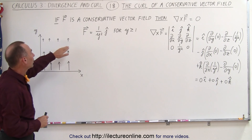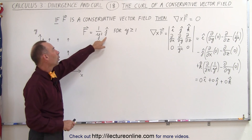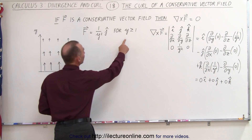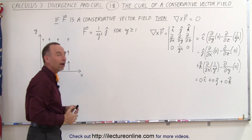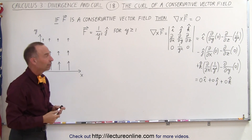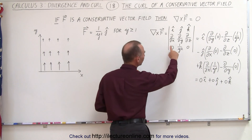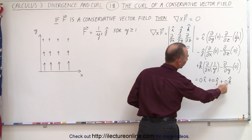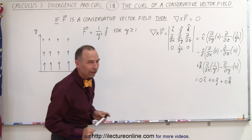Here we have an example of what we believe to be a conservative vector field. The vector field is 1 over y squared, only in the j direction. Of course the condition is that y must be greater than or equal to 1, because if y goes to 0 you have an undefined value. We took the curl and indeed we find 0i plus 0j plus 0k — we do indeed have a conservative vector field.